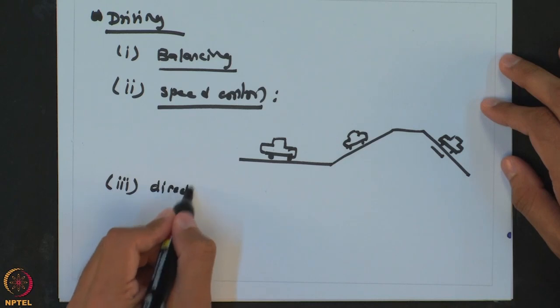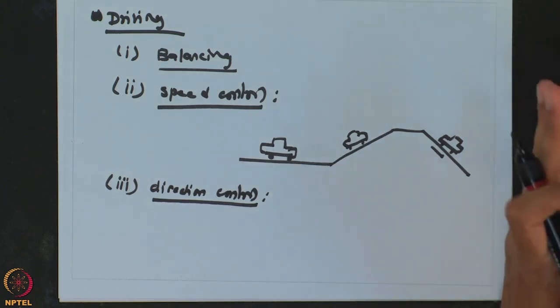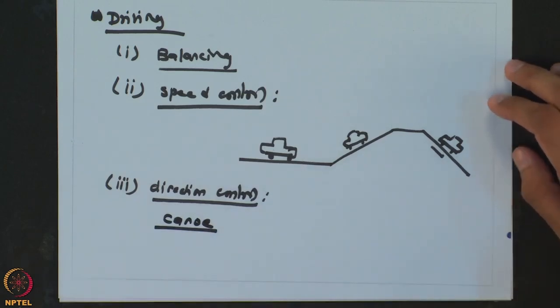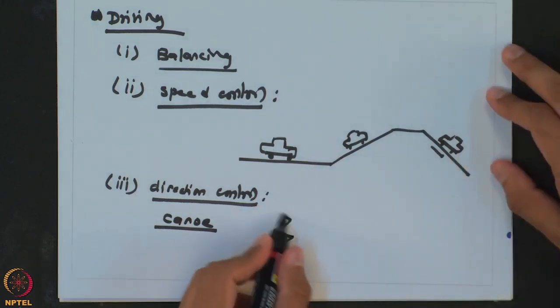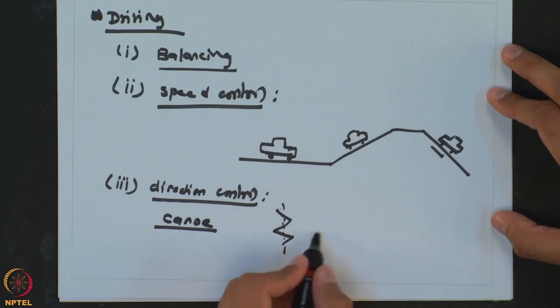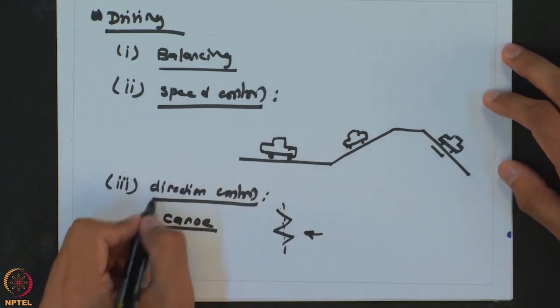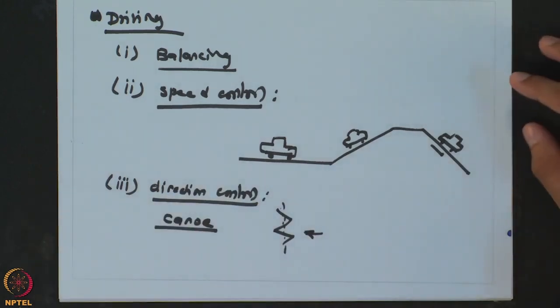Lastly, direction control: whenever you try to control direction, there is a steering wheel, and if your car moves toward one direction you move the steering wheel the opposite way to maintain a straight line. This can be visualized more when paddling a canoe — if your paddles are not synchronized, the canoe goes in a zigzag form, and you always try to maintain a straight-line path. The current may move your canoe in one direction and you counter that by paddling on the correct side. So all these examples are feedback control strategies in general use.